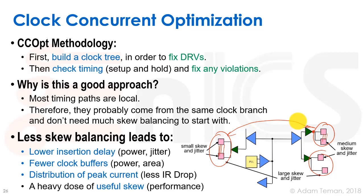If we don't do skew balancing, we get a lower insertion delay — it's not set by the farthest flip-flop, just by what we need to fix DRVs. Less insertion delay means less RC, which means less power. It also means less jitter, because jitter is caused by the number of elements along the path, and we have fewer elements.